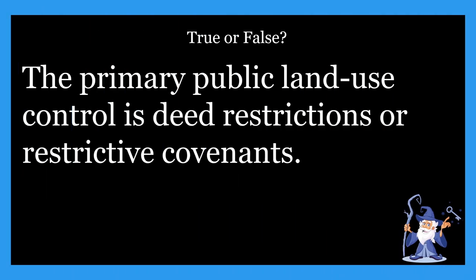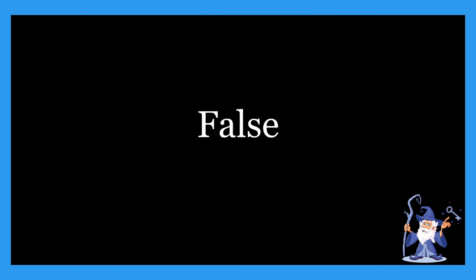Next one: the primary public land use control is deed restrictions or restrictive covenants. Is that true or false? This one is going to be false. The primary public land use control is zoning, not deed restrictions or restrictive covenants. Those are private land use controls, not public. The primary public land use control is zoning — not what the statement told us — making it false.